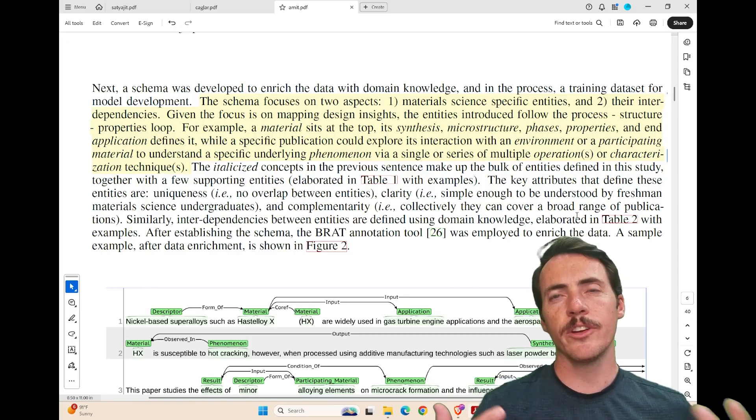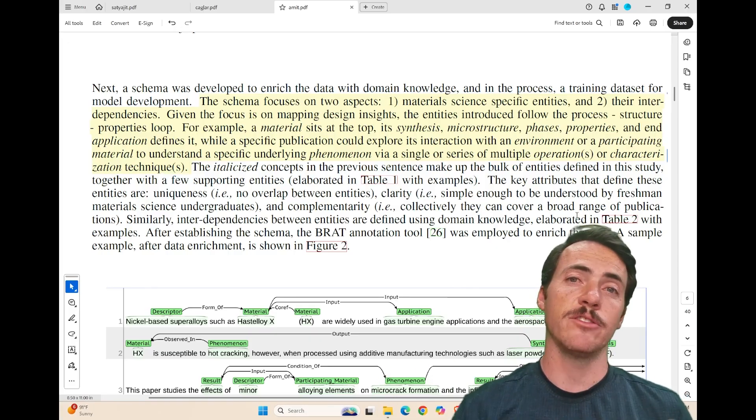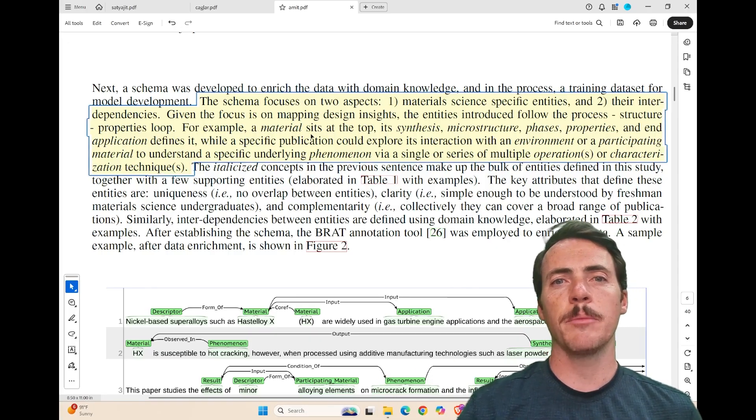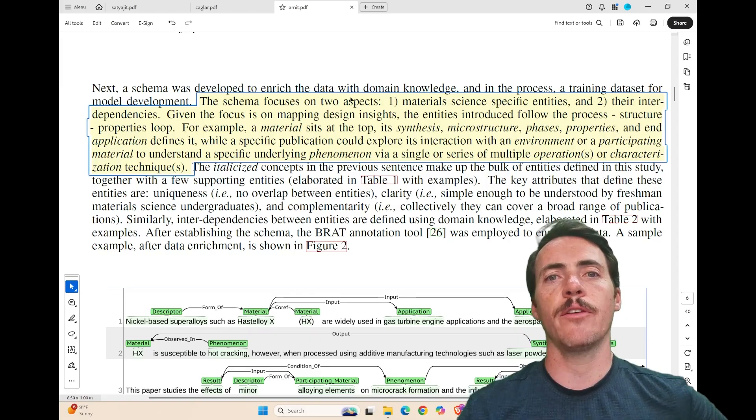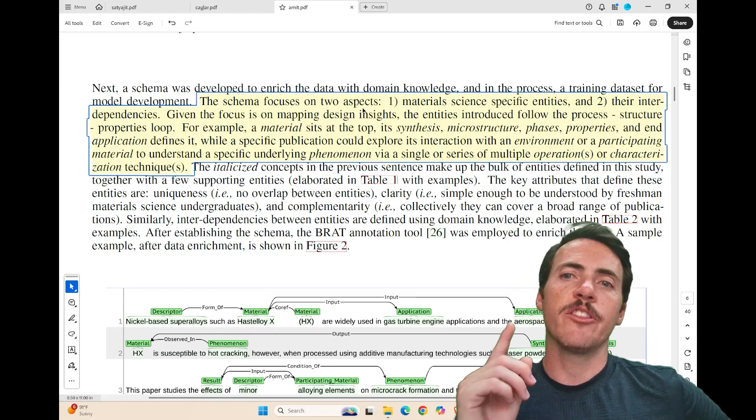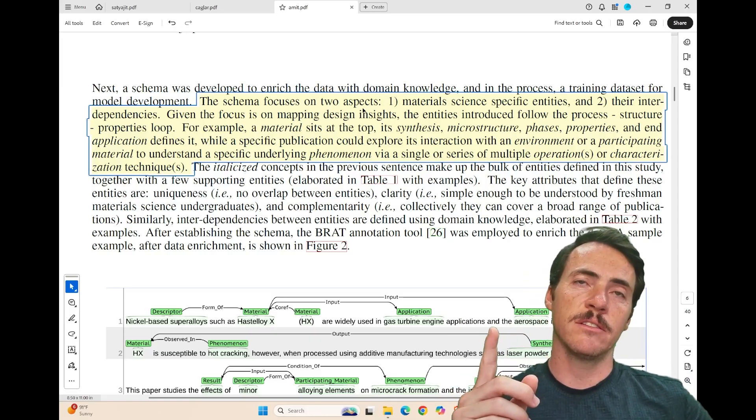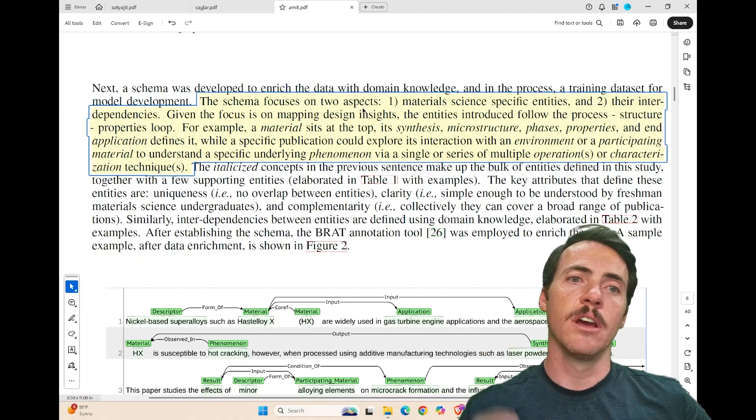Now again, there's lots of different ways that you can organize data as you're pulling it out of the literature. Here they talk about some of the aspects that guided them. They say they're going to focus on two aspects. First, the material science-specific entities, and two, their interdependencies.